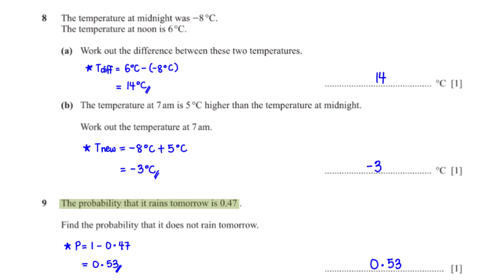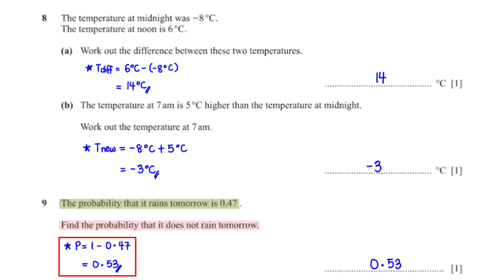The probability that it rains tomorrow is 0.47. Find the probability that it does not rain tomorrow. The sum of the probabilities that it rains and does not rain must add up to 1. So to get the probability that it does not rain, we subtract 0.47 from 1, giving us 0.53.